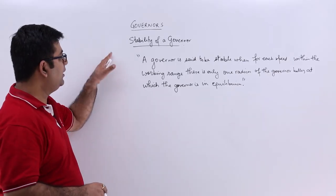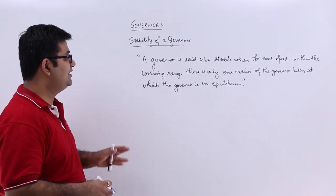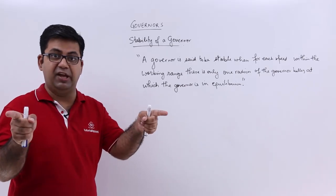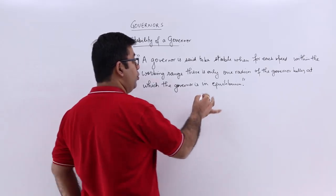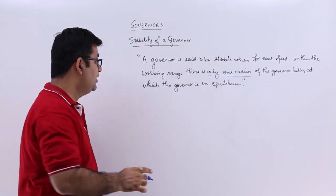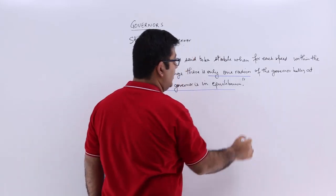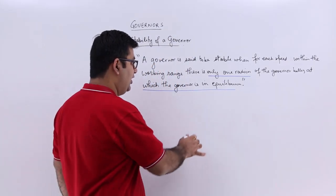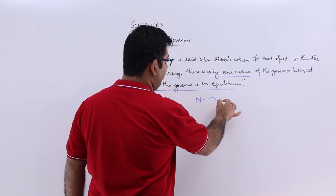Now let's talk about the stability of a governor. A governor is said to be stable when for each speed within the working range there is only one radius of the governor balls, and at this radius the governor is in equilibrium. So in a nutshell, for each speed you just have one radius.